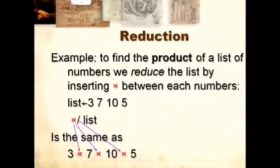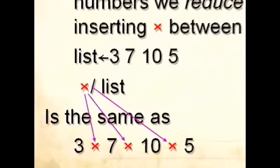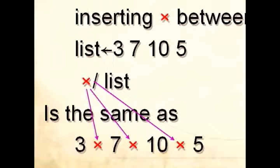Another one. If we want to find the product of a list of numbers, we reduce the list by inserting product between each number. So product slash list is the same as saying 3 times 7 times 10 times 5.